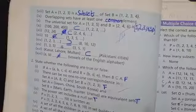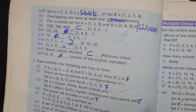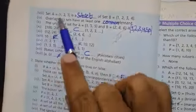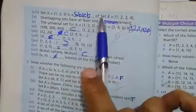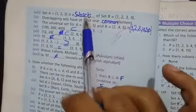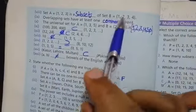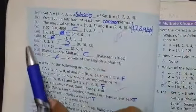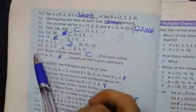Set A = {1, 2, 3} is a proper subset of Set B = {1, 2, 3, 4}. یہ دیکھو، A کے elements سارے کے سارے B میں contain کرتے ہیں۔ Subset کی Definition پوری ہوتی ہے کہ ایک set کے elements سارے دوسری set میں ہوں تو وہ subset کہلاتا ہے۔ تو A، B کا subset ہوگا۔